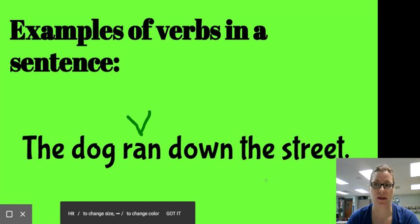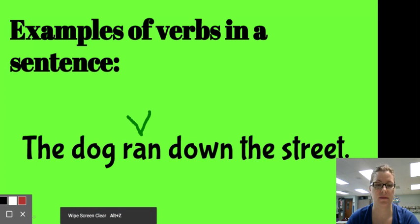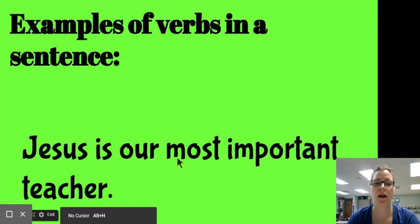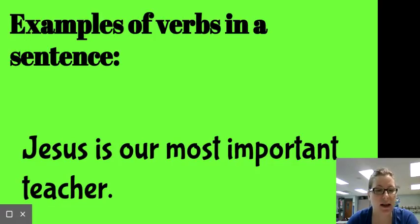All right, so now let's look at another sentence. Jesus is our most important teacher. Who is our most important teacher? Jesus. Jesus would be our subject noun. Now that we've found our subject noun, let's find the verb. What is being said about Jesus? Jesus is. Is is our verb.